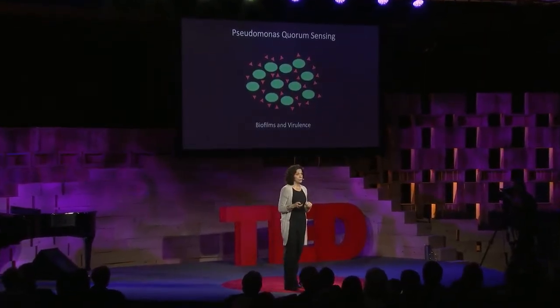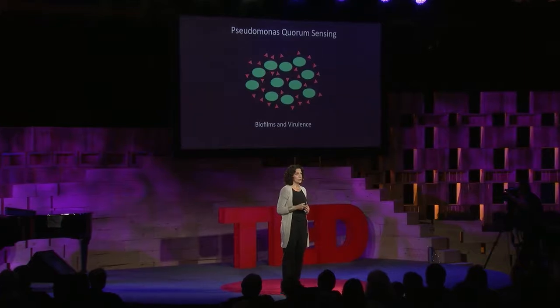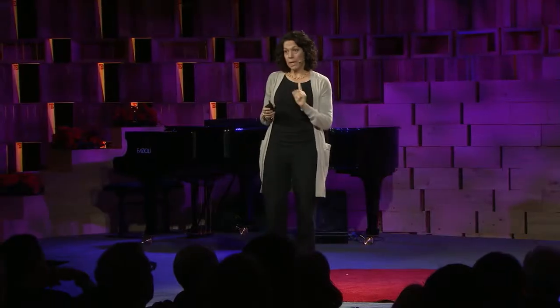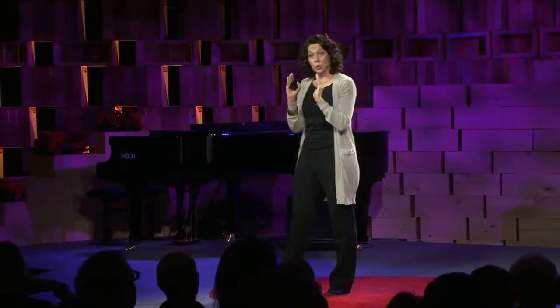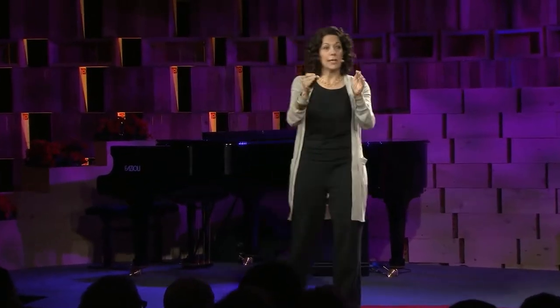We want to be able to interfere with that conversation. We know what the molecule is that Pseudomonas talks with — it's the one on the left side of this slide. Using chemistry, we changed the structure of that molecule to make the one on the right. That chemistry changed the signal molecule — the word — into an inhibitor. We changed the molecule that turns on quorum sensing into a molecule that shuts down quorum sensing.